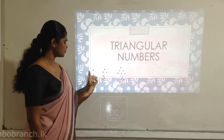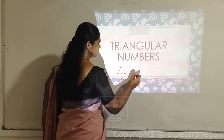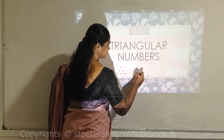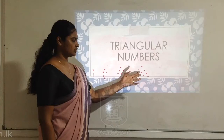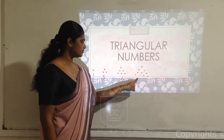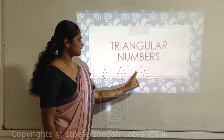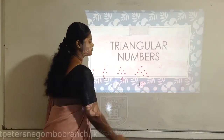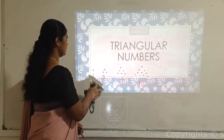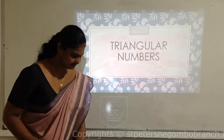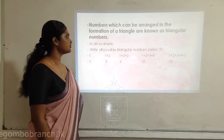The sequence of triangular numbers: the first is 1, the second has a bottom line of two giving 1+2=3, the third has a bottom line of three giving 1+2+3=6, and the fourth has a bottom line of four. Counting all the dots: 1+2+3+4=10. So 10 is the fourth triangular number. Numbers which can be arranged in the formation of a triangle are triangular numbers.